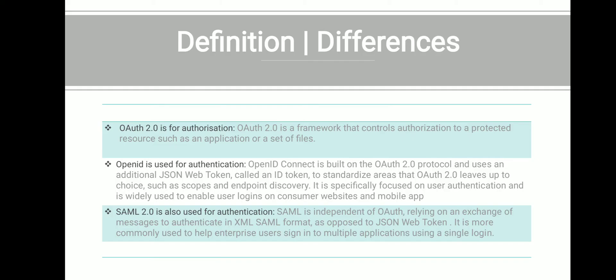OpenID Connect is built on top of the OAuth 2.0 protocol and uses JSON Web Tokens to manage scopes and endpoint discovery. It is used for authentication purposes.